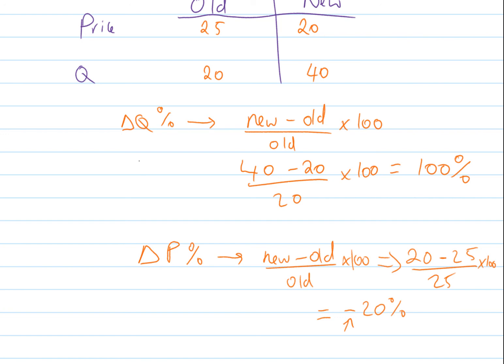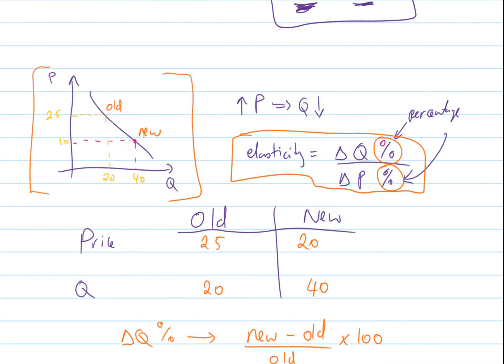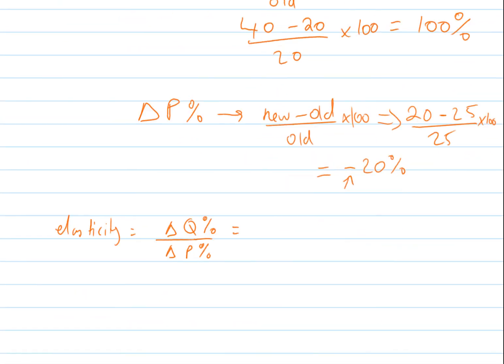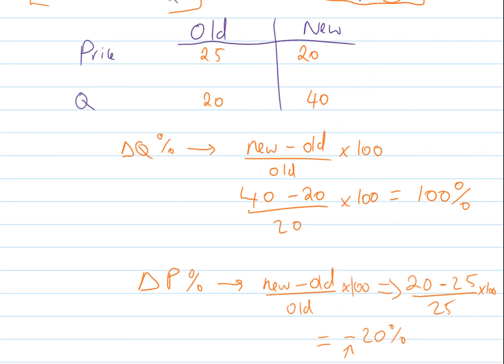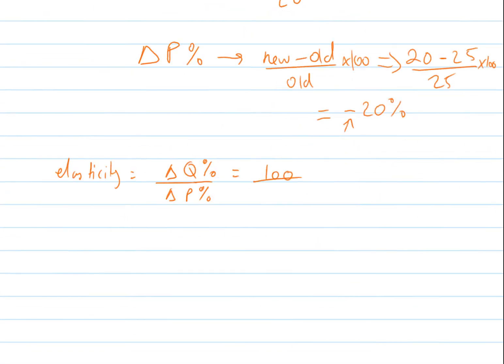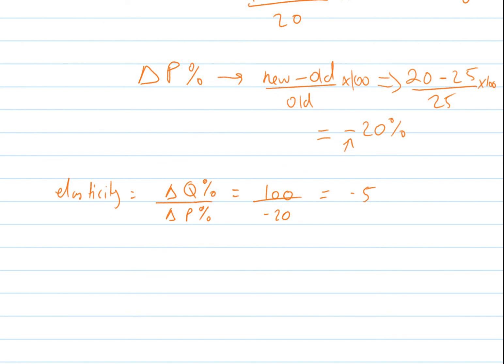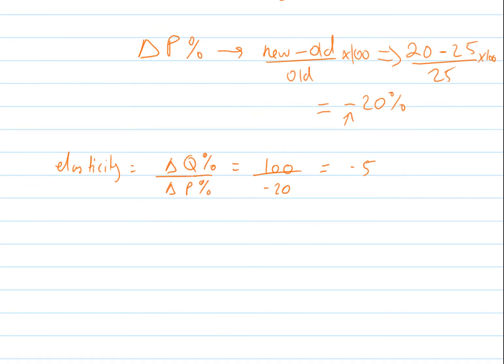This tells you there's an inverse relationship between P and Q. Looking at our curve, it's obvious that as price decreases, quantity demanded increases and vice versa. Finally, to get elasticity, it's percentage divided by percentage. So 100 divided by minus 20 equals minus 5.